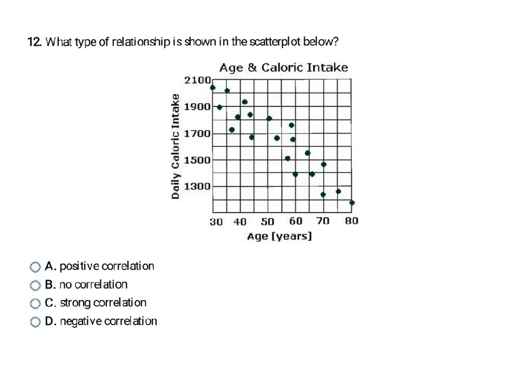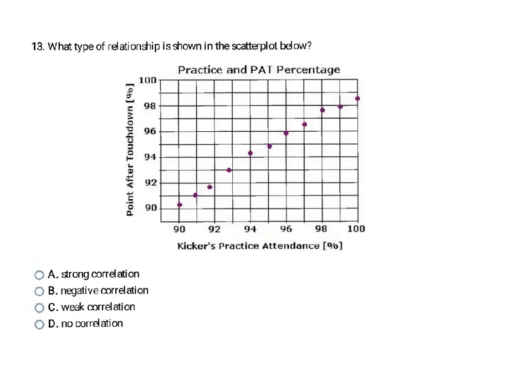This next correlation is going downhill, so that's going to be negative correlation — answer D. And here, these points are pretty close to being in a straight line with just a few outliers, so that is really strong correlation. You can see almost a perfect straight line there, so my answer is A.